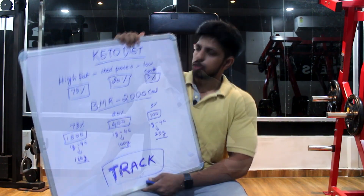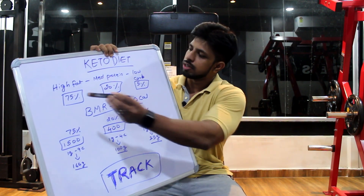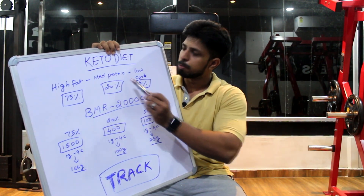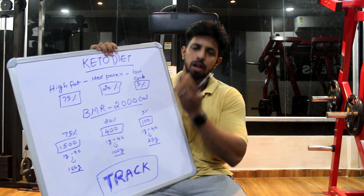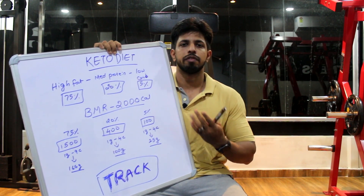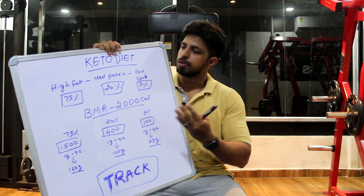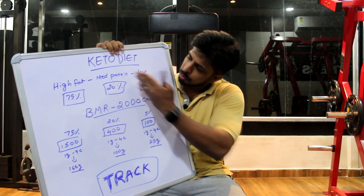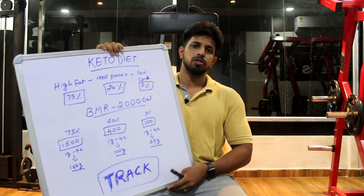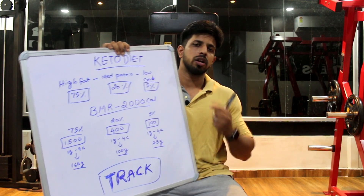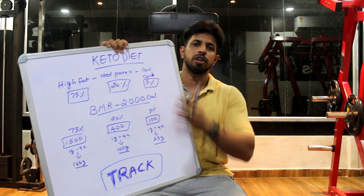Basically, the keto diet is a high-fat, medium-protein, and low-carb diet. How high-fat is it? Almost daily we consume food with 75% fat, 20% protein, and just 5% carbs. So basically, this is the keto diet macro-nutrient ratio.